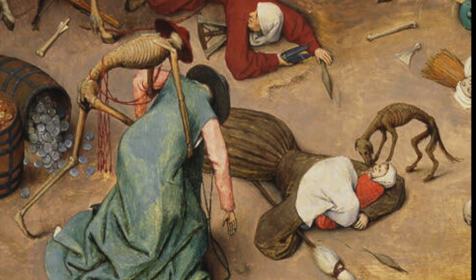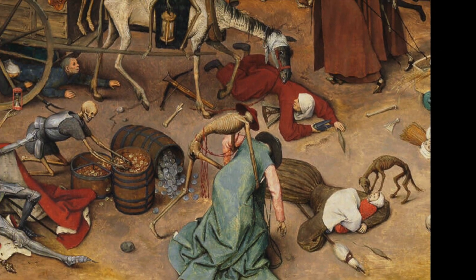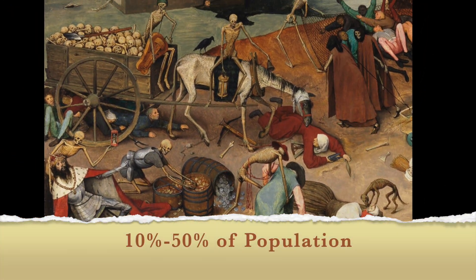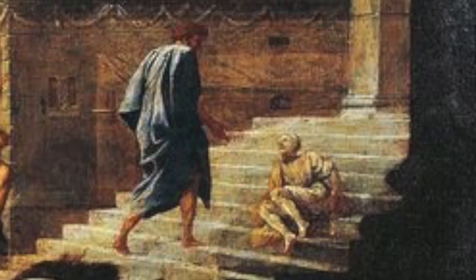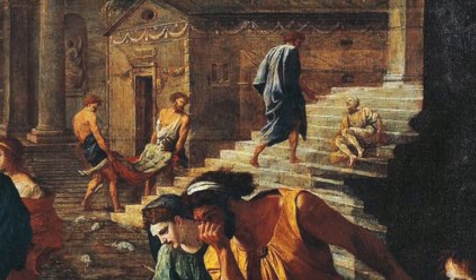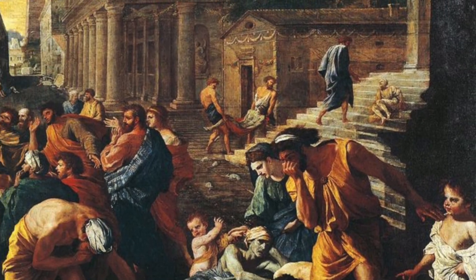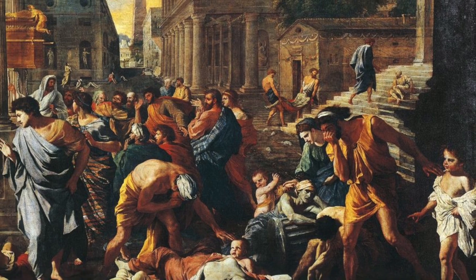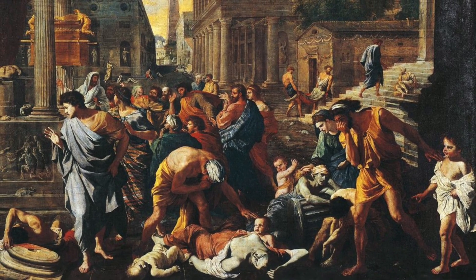During Rosa's time, every city in early modern Europe lost 10 to 50% of its population. While the Black Death — a medieval pandemic that was likely the bubonic plague — is generally associated with Europe, it actually started in Asia.